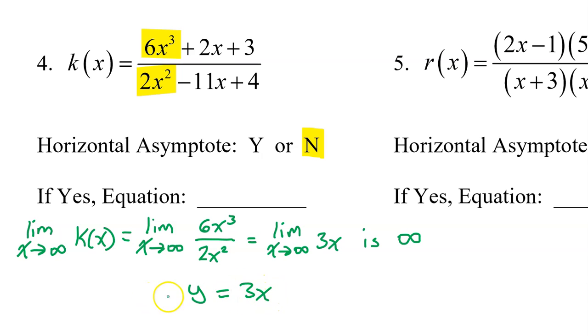Rather, I should say that the slant asymptote is parallel to the line y equals 3x.